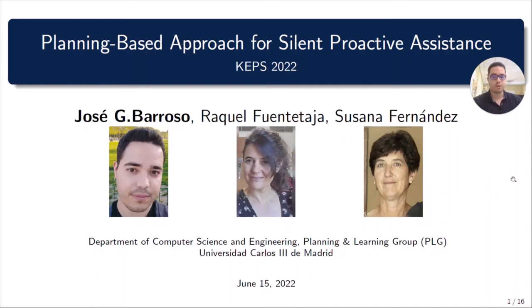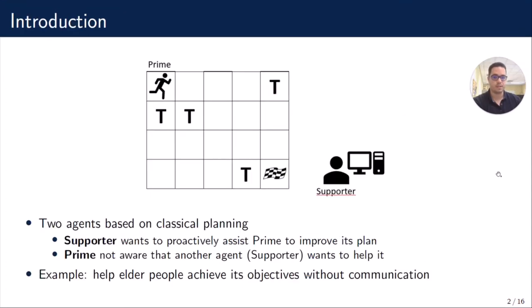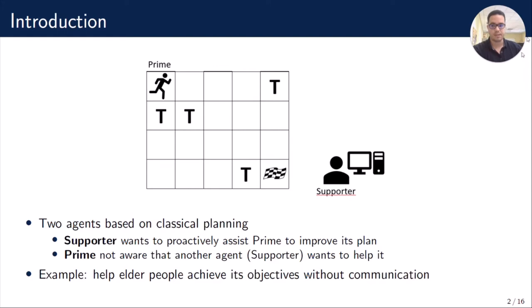Hi everyone. This is a joint work with Raquel Fuendetaj, Susana Fernandez, and Jose González Barroso, and it's titled 'Planning-based Approach for Silent Proactive Assistance.' Let's start by defining a simple domain. It consists of a grid with teleports and a goal position. There are two agents: Supporter and Prime.